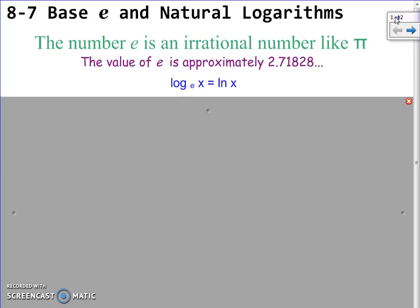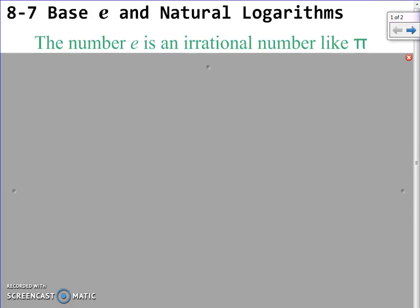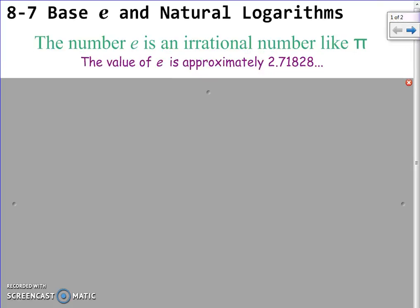Before we get into that, we're going to be learning about a new number that's actually denoted with a letter. So e is an irrational number, just like pi is an irrational number. Pi is 3.14159, e is also a number. It's about 2.7.